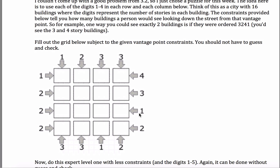These numbers on the outside tell me how many buildings I would see from that perspective. This four right here gives me a lot of information — the only possible way I could see four buildings is if there's a one, two, three, and four in ascending order. The only way you can see four buildings is if they get progressively taller as they get further away, because a taller building in front will block a shorter one behind it. So anytime I see a four, I can automatically put down that ordering.